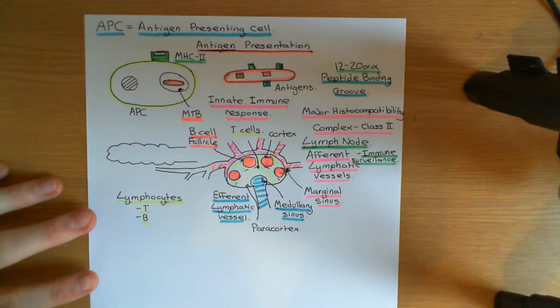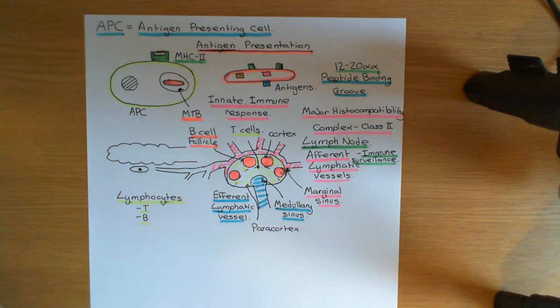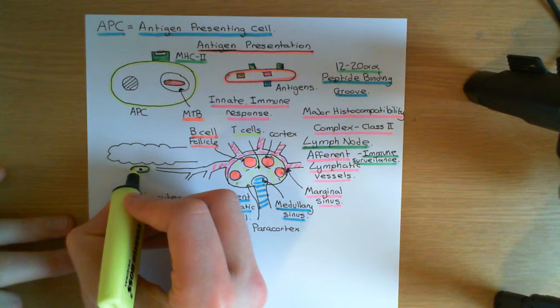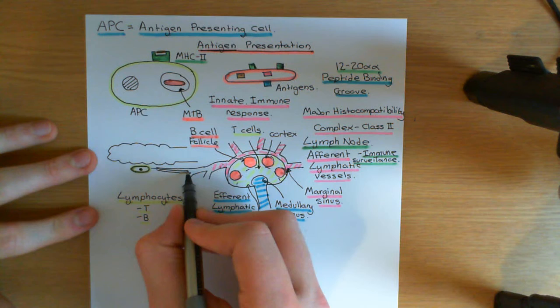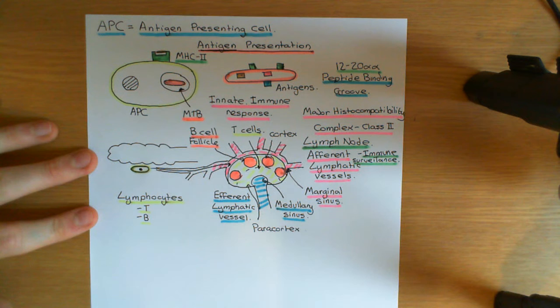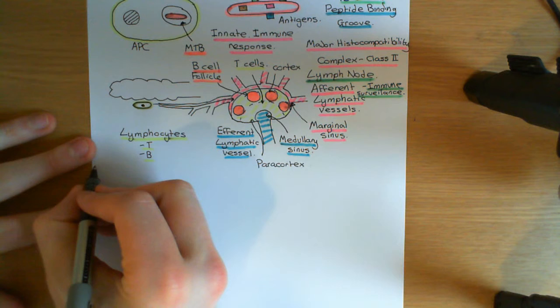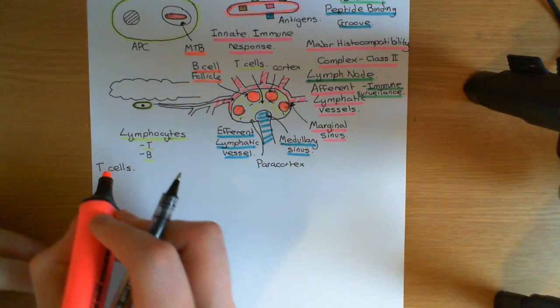Our antigen presenting cell, which has successfully phagocytosed a mycobacterium tuberculosis cell and has MHC class II protein complexes on its surface loaded with antigen fragments, is going to come through the lymphatic vessels to one of the mediastinal lymph nodes and come into contact with loads of lymphocytes. It's not going to activate B cells — it's going to activate T cells. So now we need to discuss T cells.